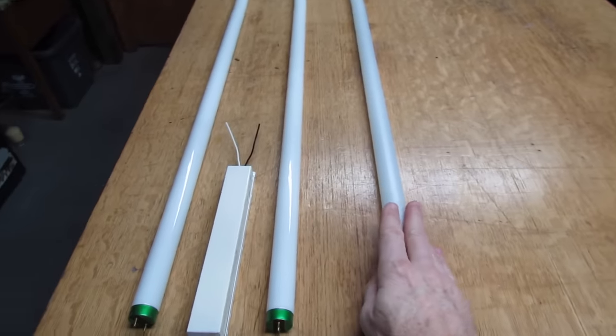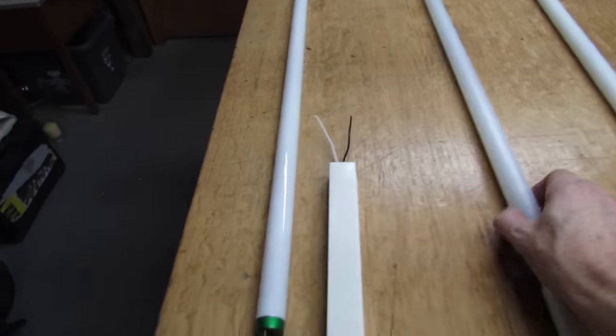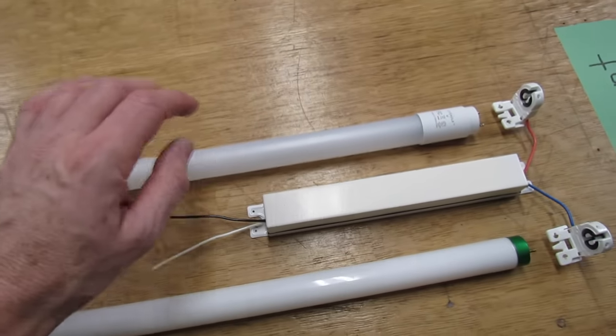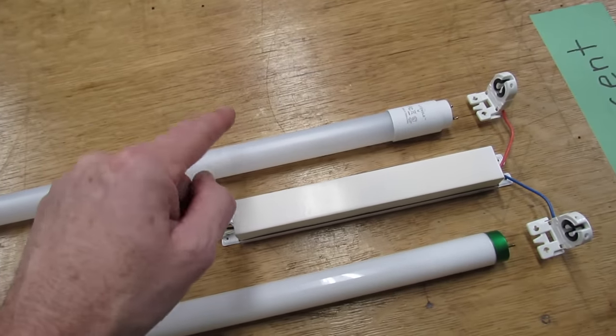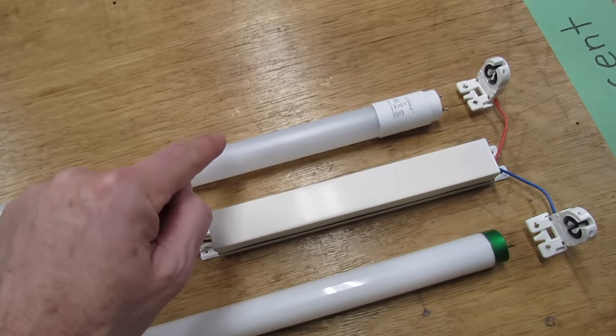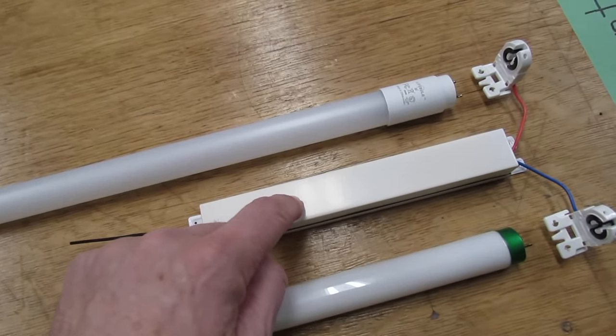If you go with LED plug-and-play, all you do is take out the fluorescent bulb and replace it with the plug-and-play. That's easy, but there are two things to consider. You're using more power because you have to power the ballast and the bulb. Second, if the ballast ever goes, you still have to replace it.